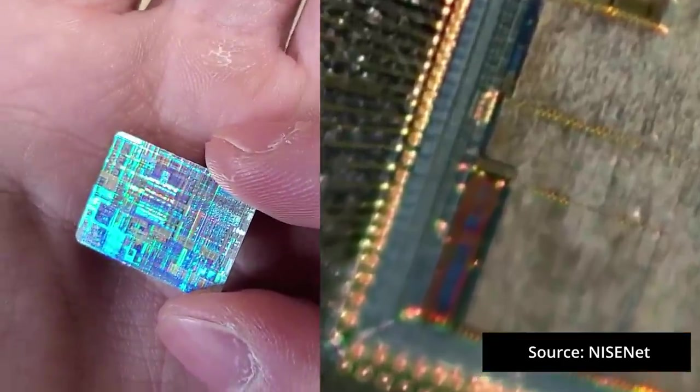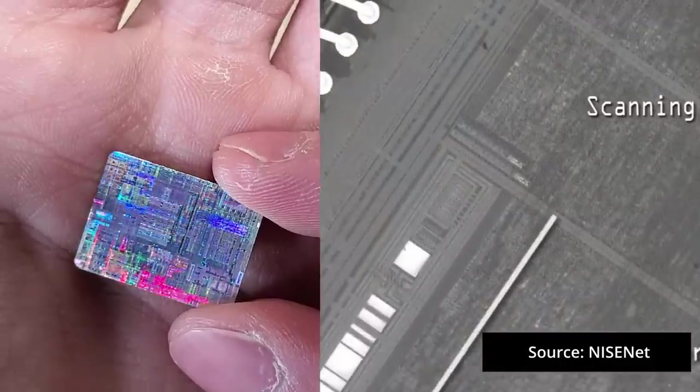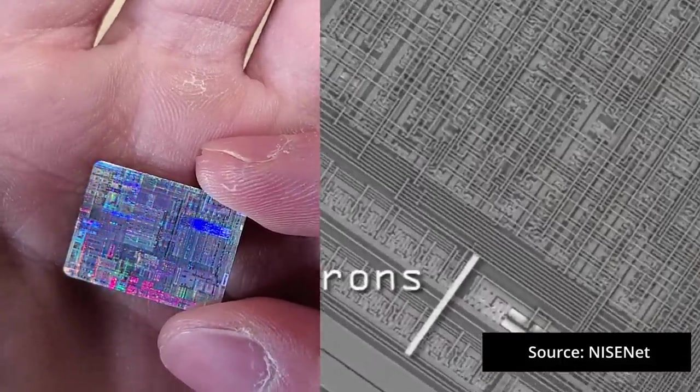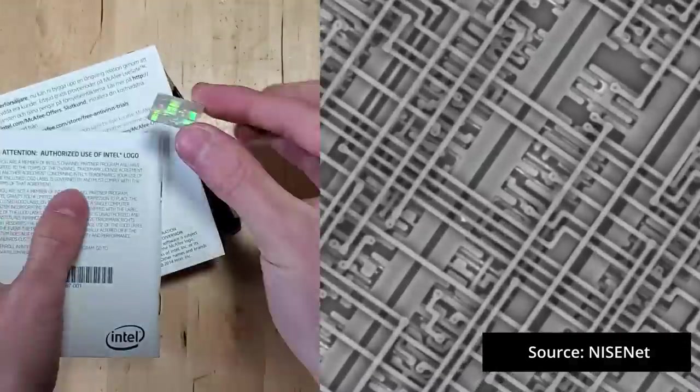Processors are composed of millions of microscopic transistors carved into various layers of semi-conductive material like silicon. And the various channels and components that are etched into the chip itself look a lot like this sticker.